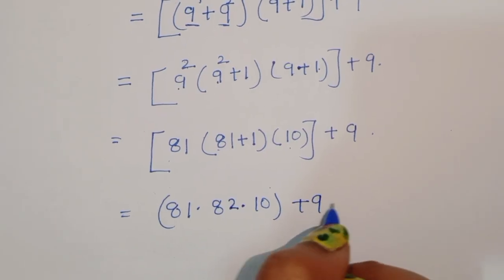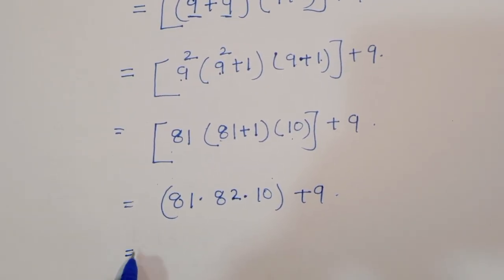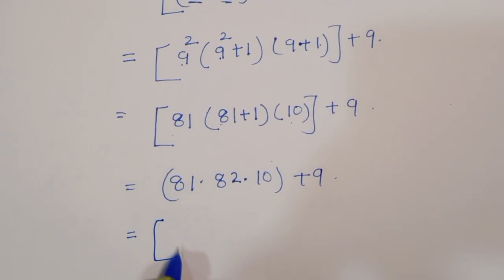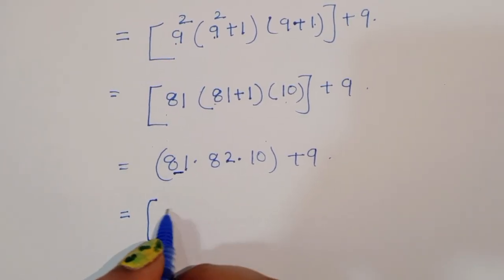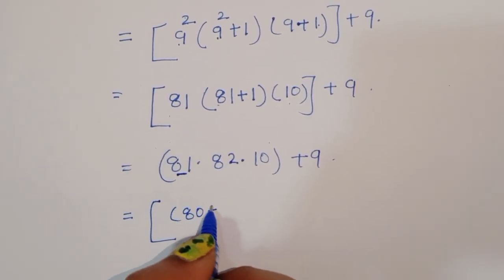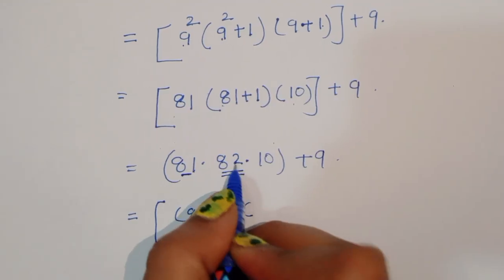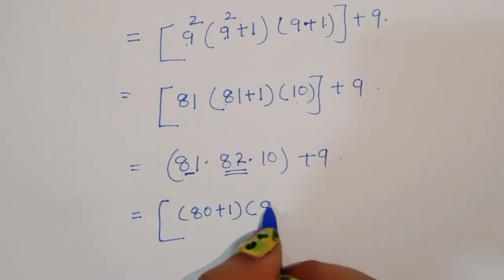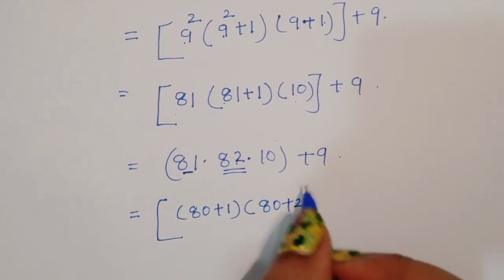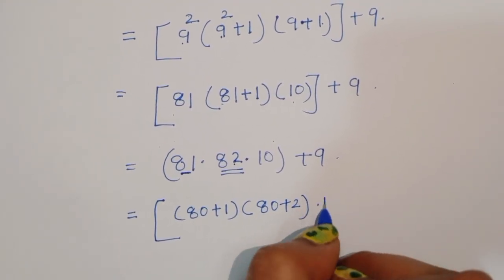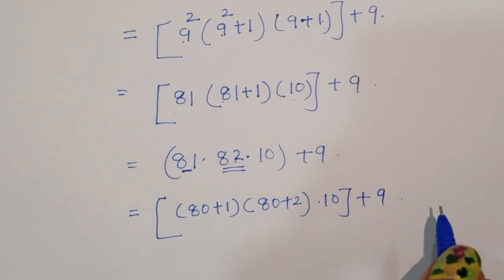Now is equal to: this 81 we can write as 80 plus 1, so we can write this 80 plus 1 times, and this 82 we can write as 80 plus 2, times 10, plus 9.